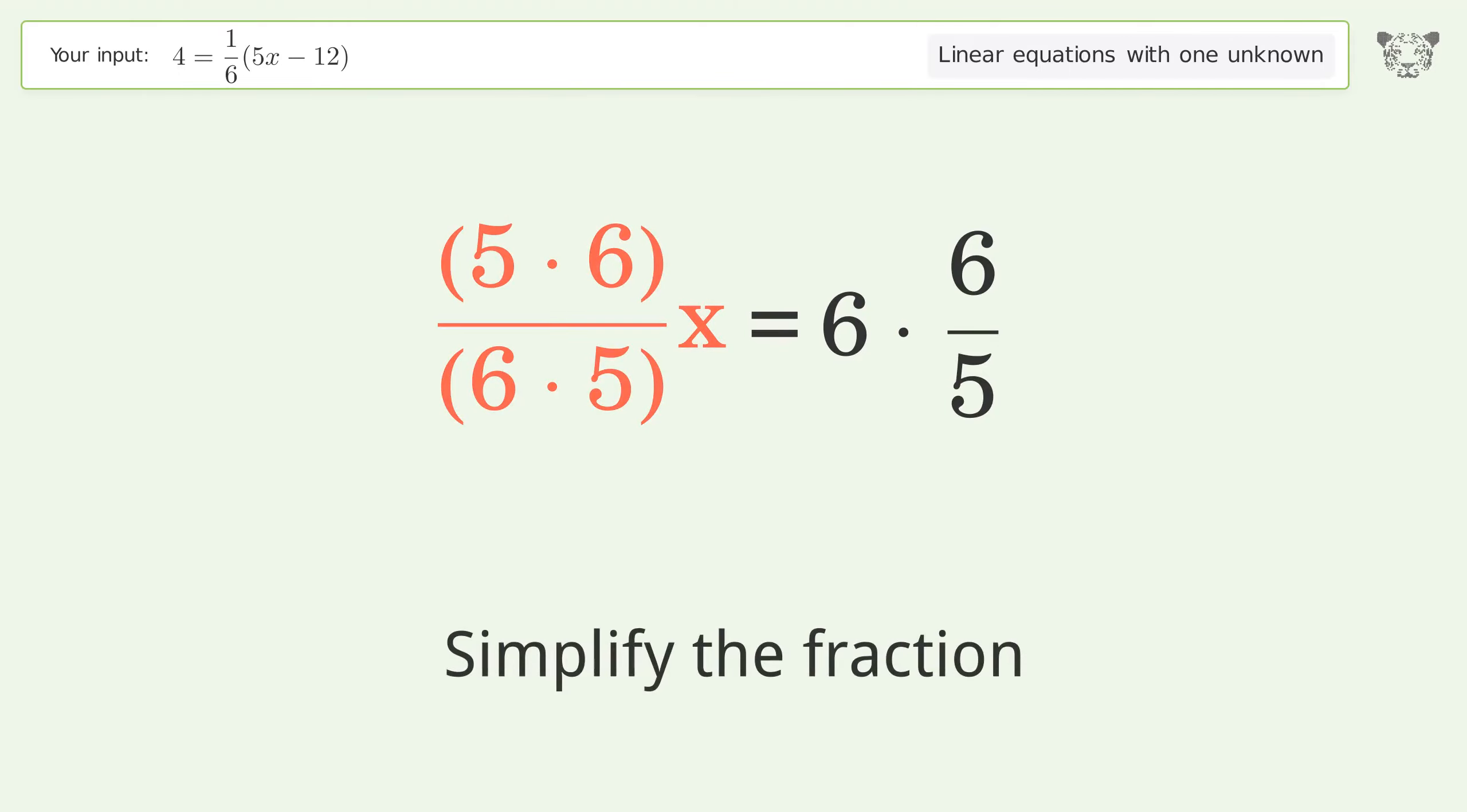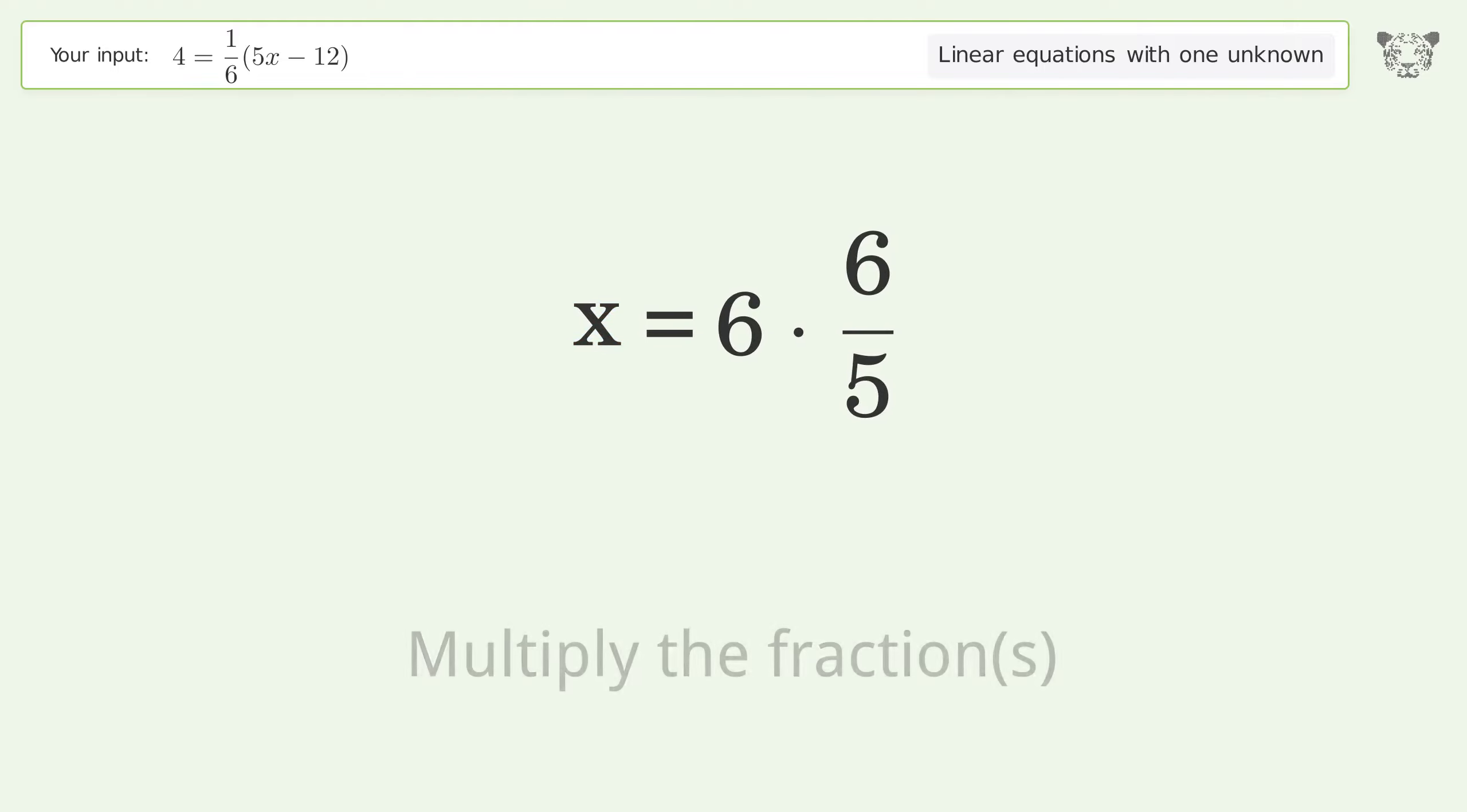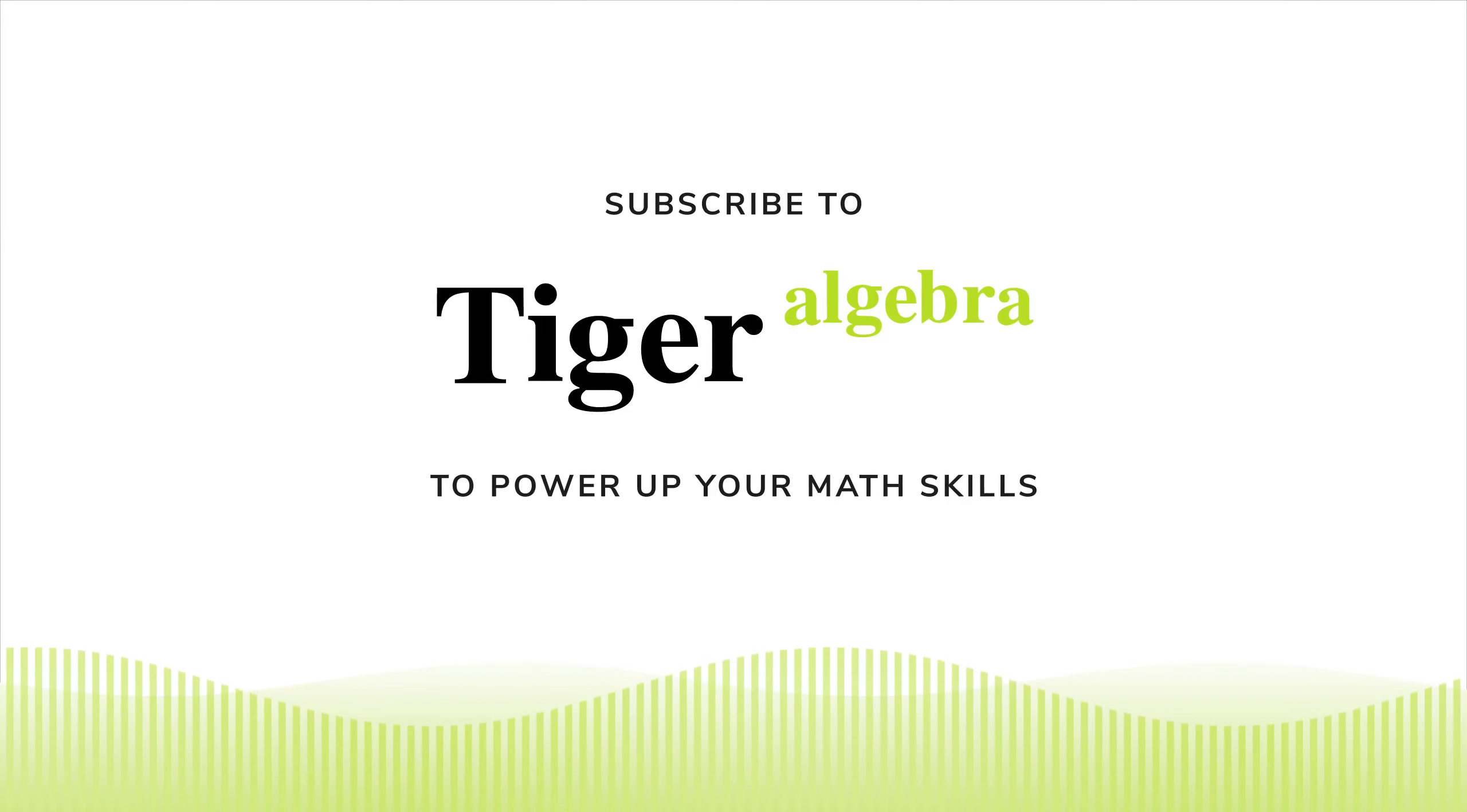Simplify the fraction. Multiply the fractions. Simplify the arithmetic. And so the final result is x equals 36 over 5.